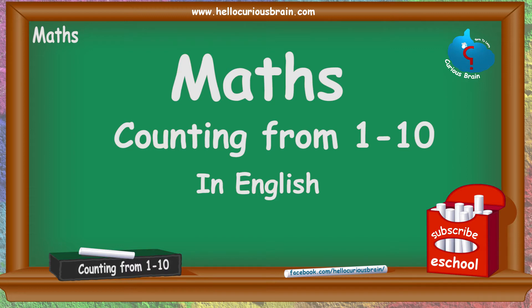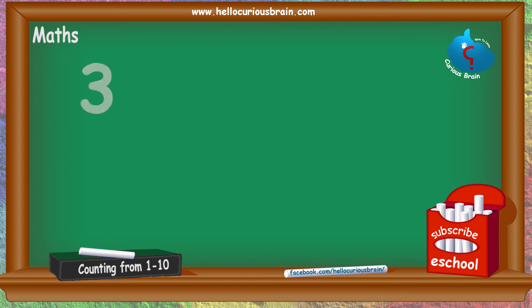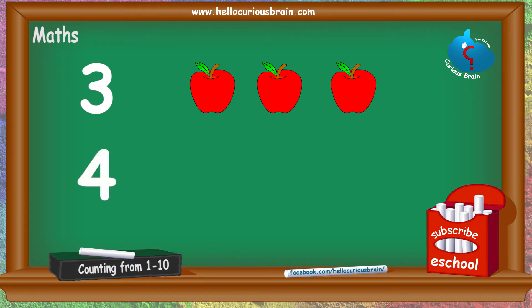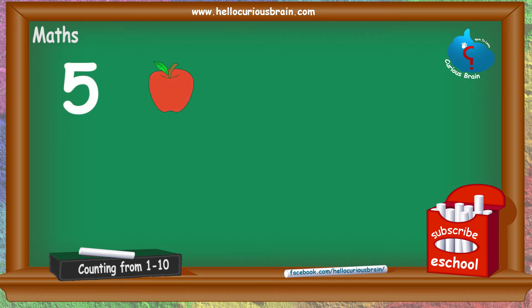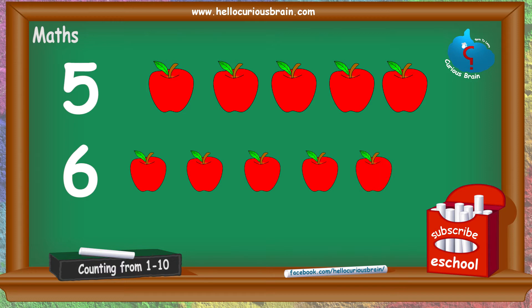One — one apple. Two — one, two — two apples. Three — one, two, three — three apples. Four — one, two, three, four — four apples. Five — one, two, three, four, five — five apples. Six — one, two, three, four, five, six — six apples.